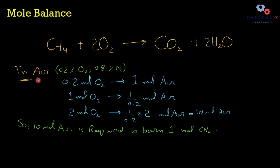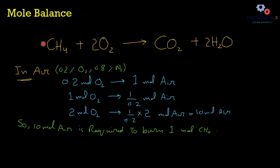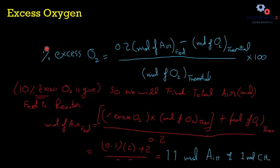Since we are using air, and oxygen is 20% of air, we use the relationship: 0.2 moles of oxygen are present in 1 mole of air. Dividing both sides by 0.2, we find that 2 moles of oxygen are present in 10 moles of air. So theoretically, we need to insert 10 moles of air to react with 1 mole of methane. But we have 10% excess oxygen to account for.